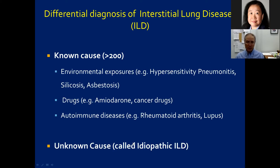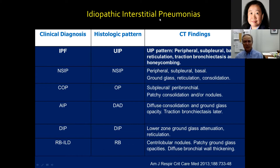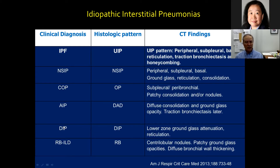The other major group of ILDs are called idiopathic — we don't know their cause. These idiopathic interstitial pneumonias include IPF, NSIP, DIP, RBILD, and others. The last two — DIP and RBILD — are caused by smoking, and we also know IPF is associated with smoking. So smoking can cause interstitial lung diseases and eventually pulmonary fibrosis.